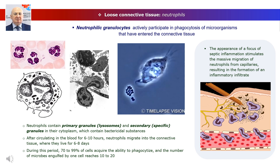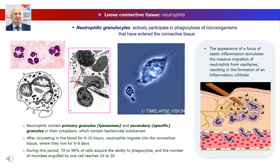In addition to monocytes, other blood cells — neutrophilic granulocytes or neutrophils — actively participate in phagocytosis of microorganisms that have entered the connective tissue. Neutrophils contain primary granules, lysosomes, and secondary specific granules in their cytoplasm, which contain bactericidal substances. After circulating in the blood for 6 to 10 hours, neutrophils migrate into the connective tissue, where they live for 6 to 8 days. During this period, from 70 to 99% of cells acquire the ability to phagocytize, and the number of microbes engulfed by one cell reaches from 10 to 20.